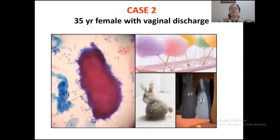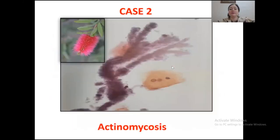In case two, on the left side, a blue tangled mass of thin filamentous bacteria called Actinomyces can be seen, giving some resemblance to woolly balls and dust bunnies. Another picture shows the colony of Actinomyces resembling a bottle brush. The diagnosis was actinomycosis, and this patient was an IUD user.